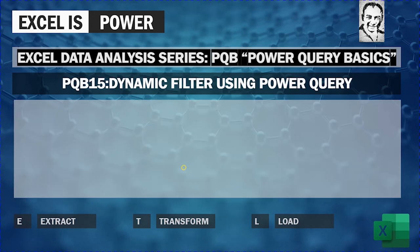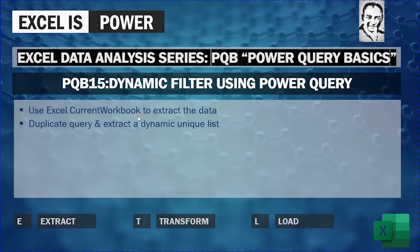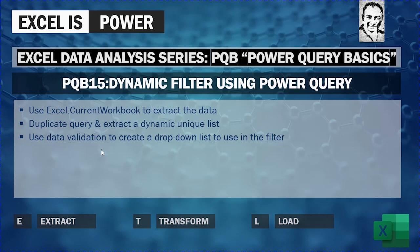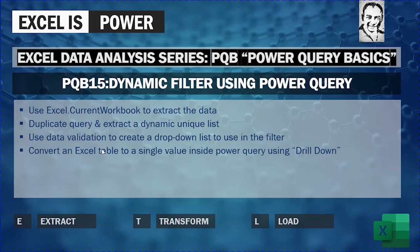While working on this example we are going to cover several things: the excel.currentworkbook function that Excel uses to send data to Power Query; how to duplicate queries and extract a dynamic unique list; how to use data validation to create a drop-down list for the filter; and how to convert an Excel table to a single value inside Power Query using a functionality called drill down.